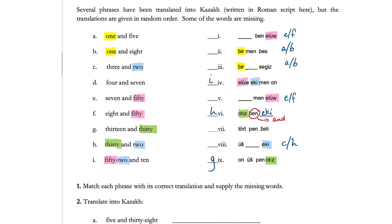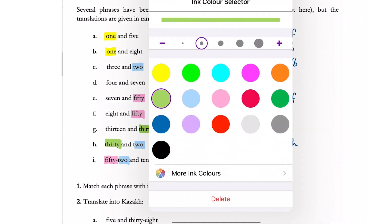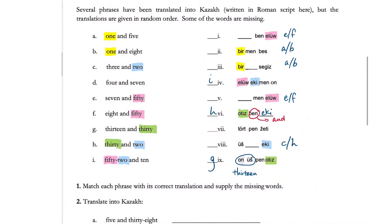From this we can also figure out that the middle word actually means 'and,' and there are different forms of 'and' depending on the previous word. Because we know g is 13, which can be separated into 10 and 3, we can figure out which one matches with 'i' — it ends with 10 as well, and it turns out it matches with number four. From the 13 we can also figure out what 'three' is, and we can match c with number eight.